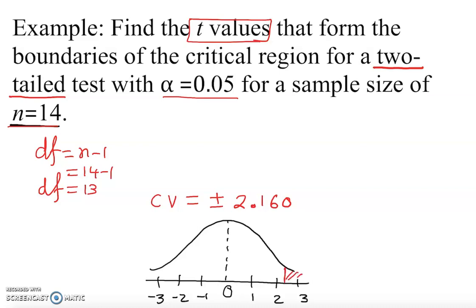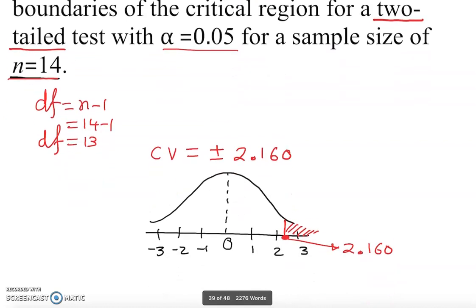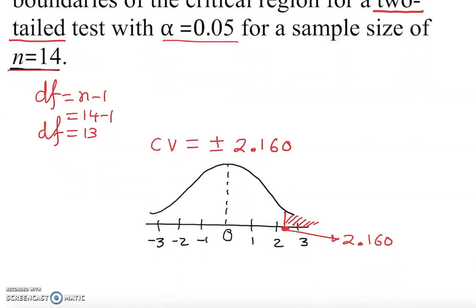And this is 2.160. Most probably I'm going to have this value here. So these are my critical regions. This point here is 2.160, let's go a little bit up here, which is plus 2.160, and up here is negative 2.160. So this point here is negative 2.160. That's why it's plus and minus.